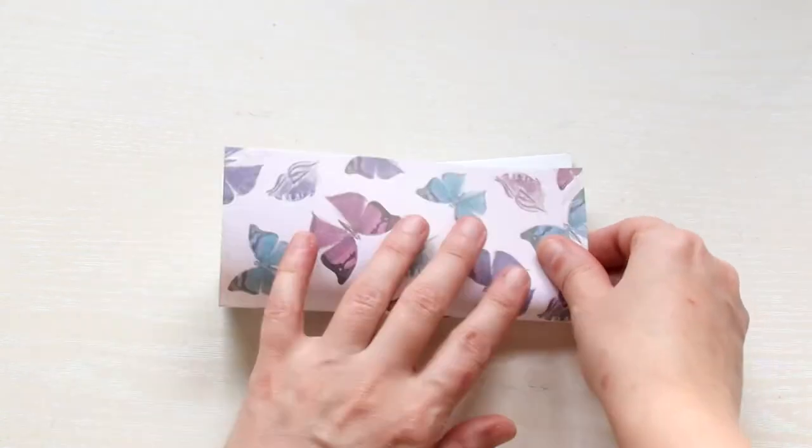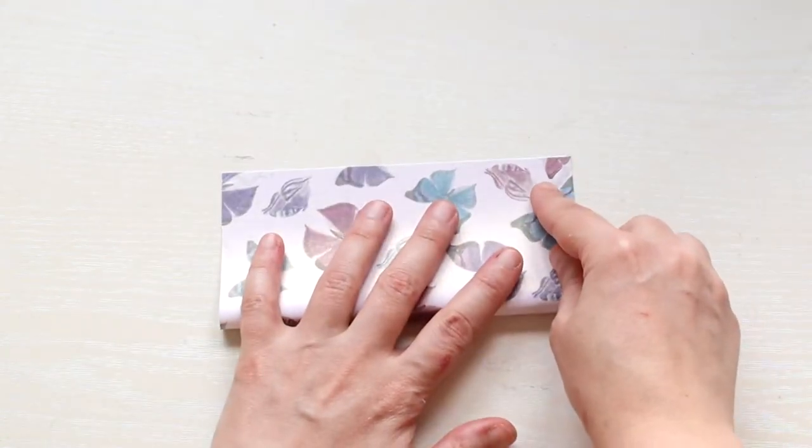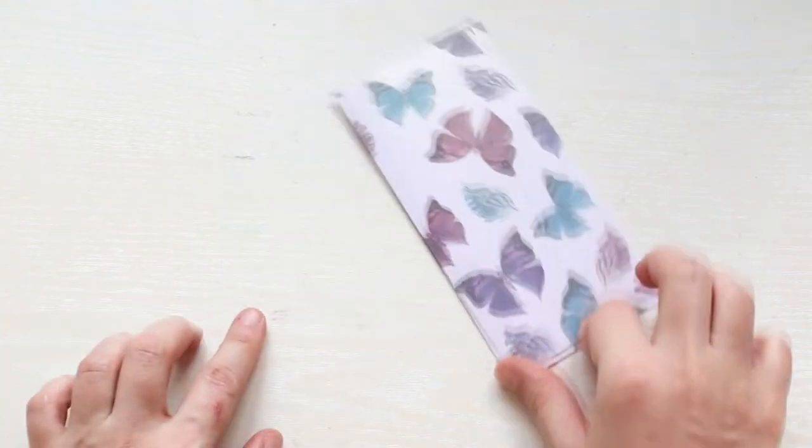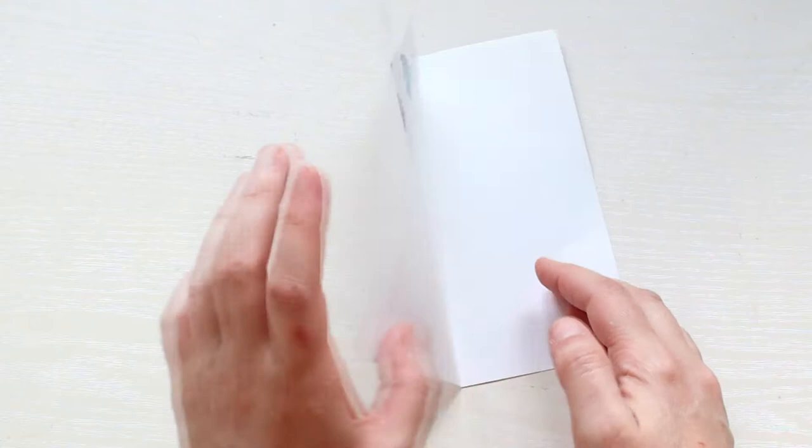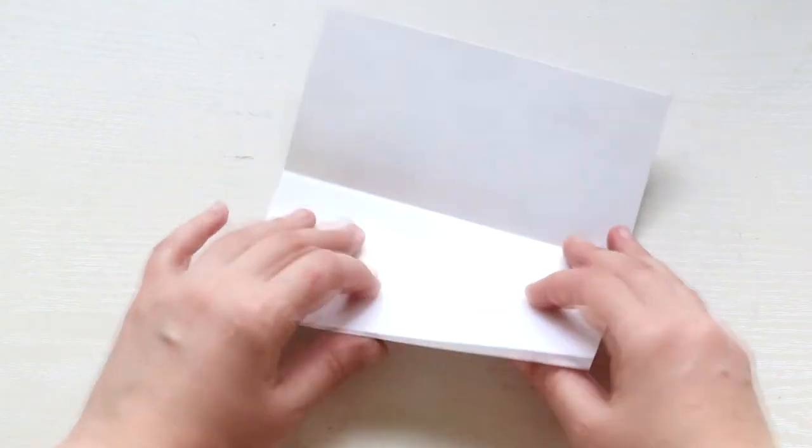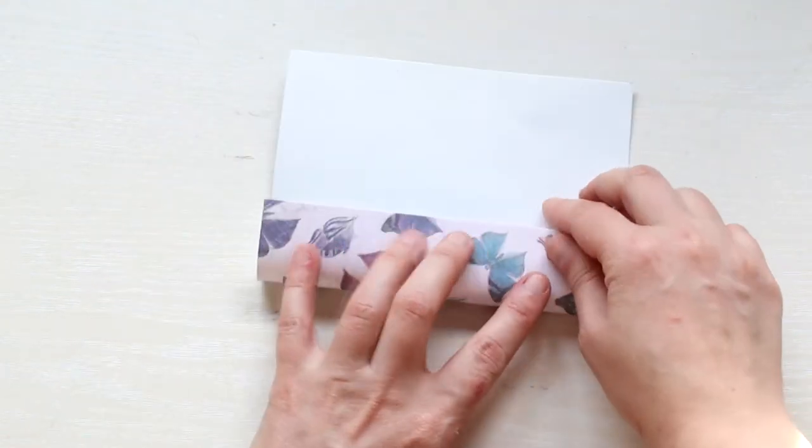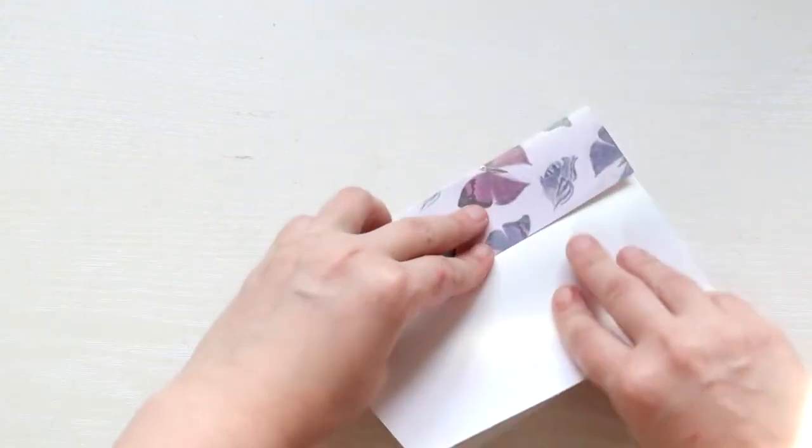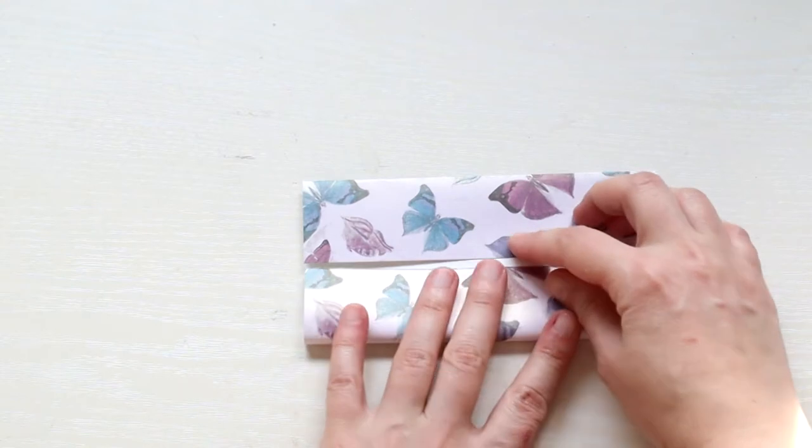So take your paper and fold it in half. Then open and fold the sides in half. So you'll have four quarters.